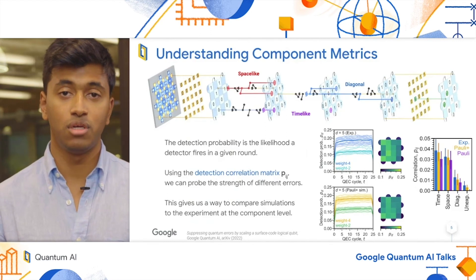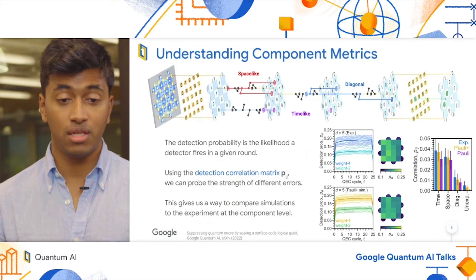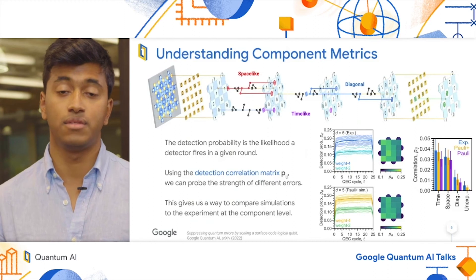Time-like errors, shown in purple, occur when a measurement error has happened. In this case, an X error has occurred right before measurement, causing a stabilizer to flip in one round, and then flip again in the subsequent round.